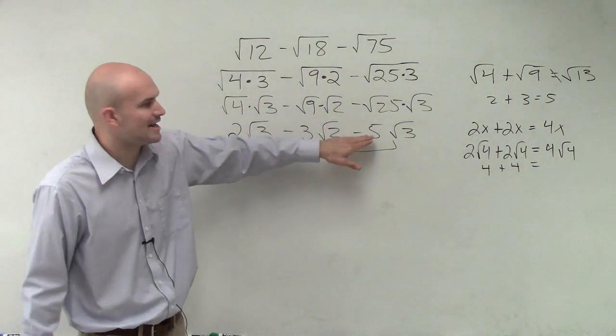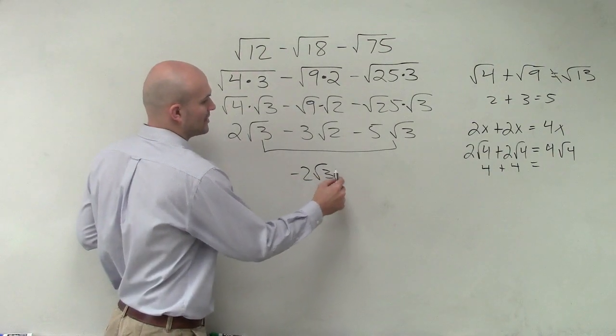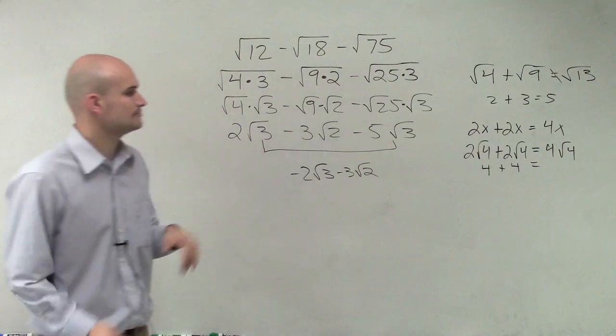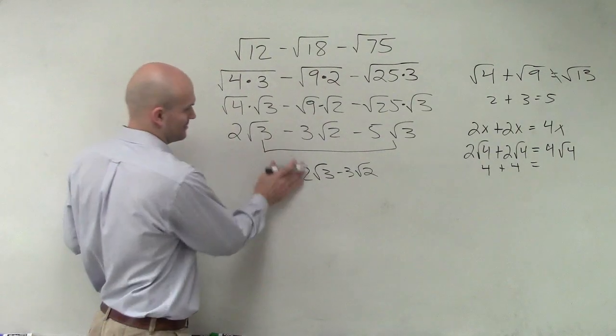So therefore, 2 radical 3 minus 5 radical 3 is going to be negative 3 radical 3 minus 3 radical 2. Negative 3. Yes, it is. Thank you.